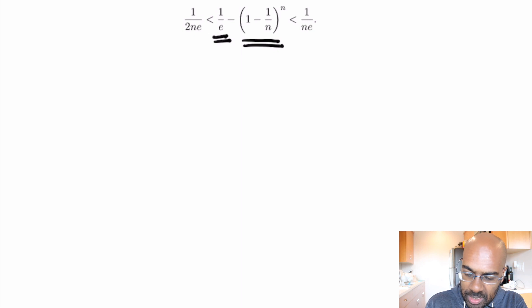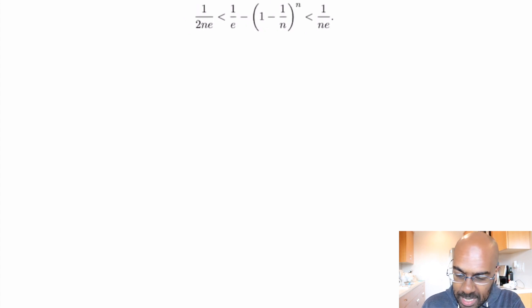In calculus one learns that the limit as n approaches infinity of this quantity right over here actually is 1 over e. The question is to prove that this estimate for any positive integer n is actually between 1 over 2ne and 1 over ne.